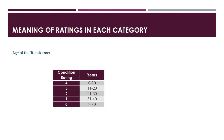Now let us go over the rating categories that compose the health index. First, let us look at the transformer's age. A transformer is assigned a rating of 4 if it is less than 10 years; a rating of 3 if it is between 11 to 20 years; a rating of 2 if it is 21 to 30 years; a rating of 1 if it is between 31 to 40 years; and a rating of 0 for any transformer that is over 40 years of age.